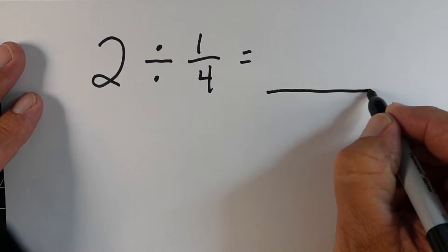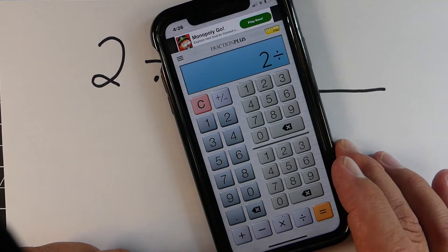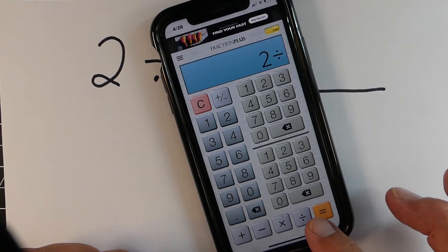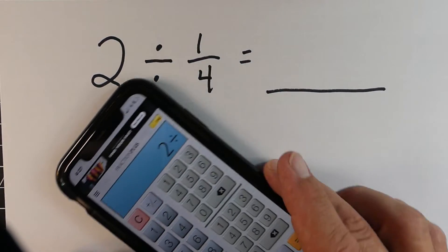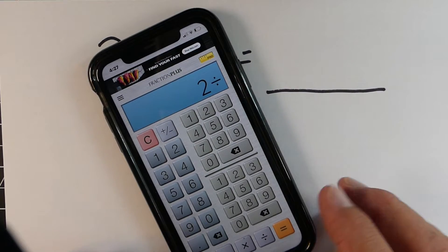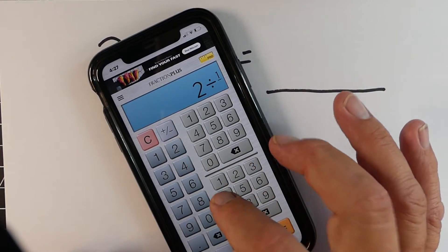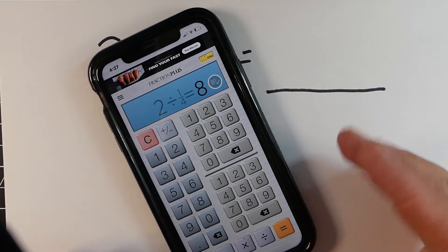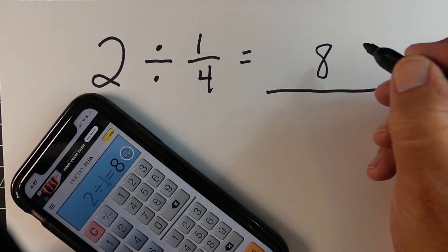Okay, here's our next example. We're starting with 2 and we're dividing this time by 1 fourth. So we're going to model this one. This is a little different because we have a fraction here. So we're going to divide it by the 1 fourth. And you can see that our answer ends up being 8. So how is that possible?